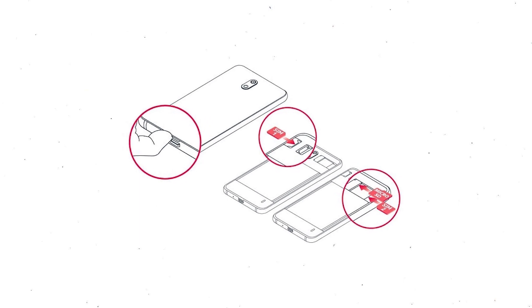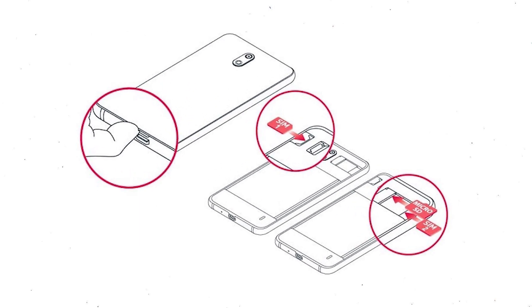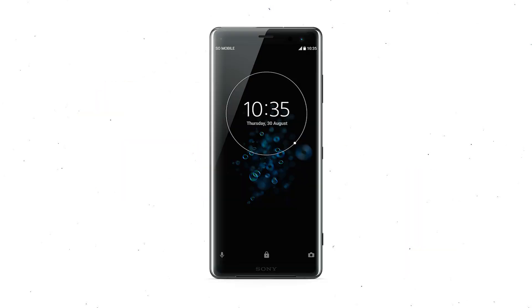Reset will delete all your mobile data, so you better back up all important data and remove SIMs and SD card. Then power off your mobile by holding the Power button.